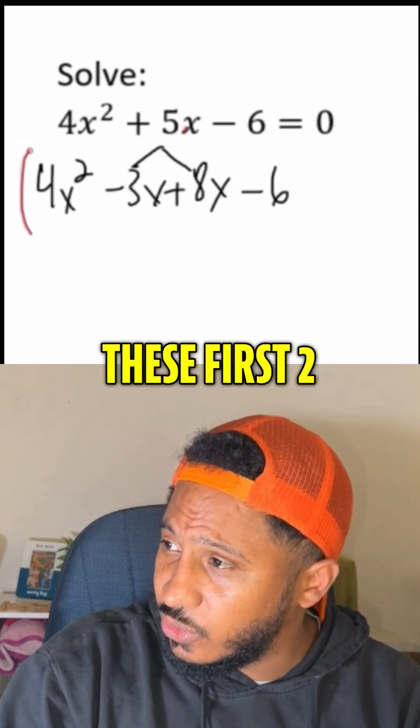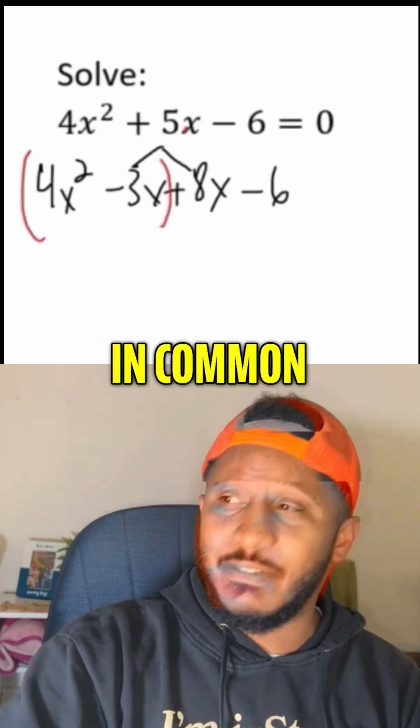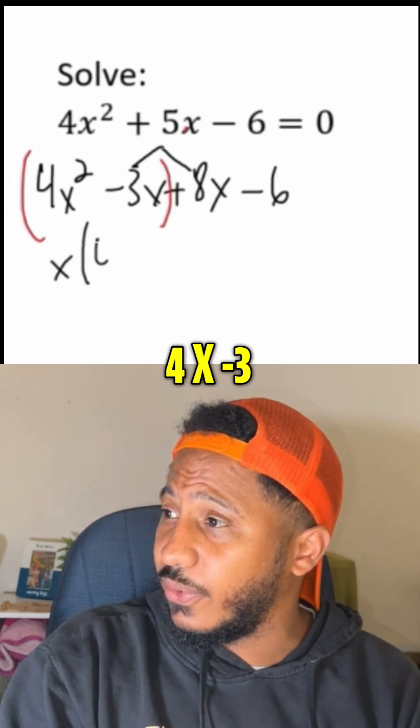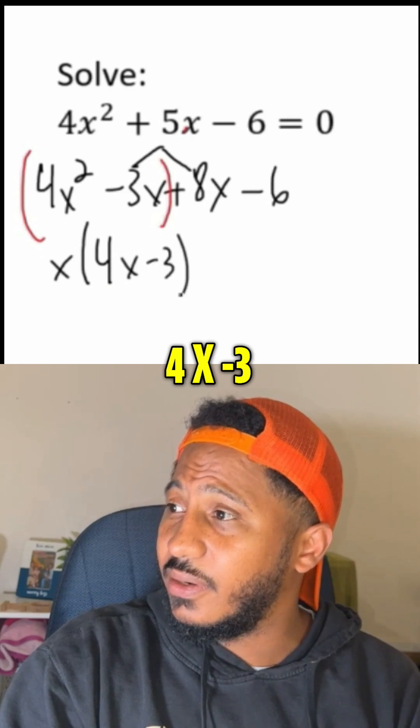If I group these first two, what's their GCF? What do they have in common? Well, they both have an x in common. So we're taking x off of each. What's left is just 4x minus 3.